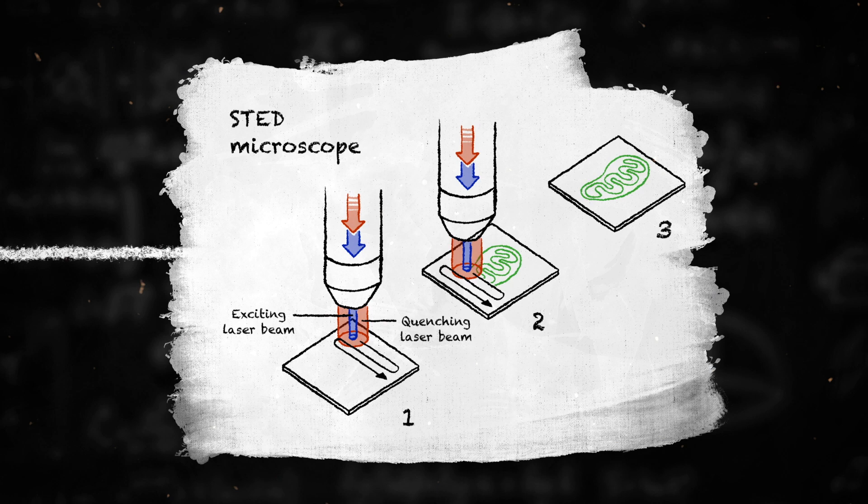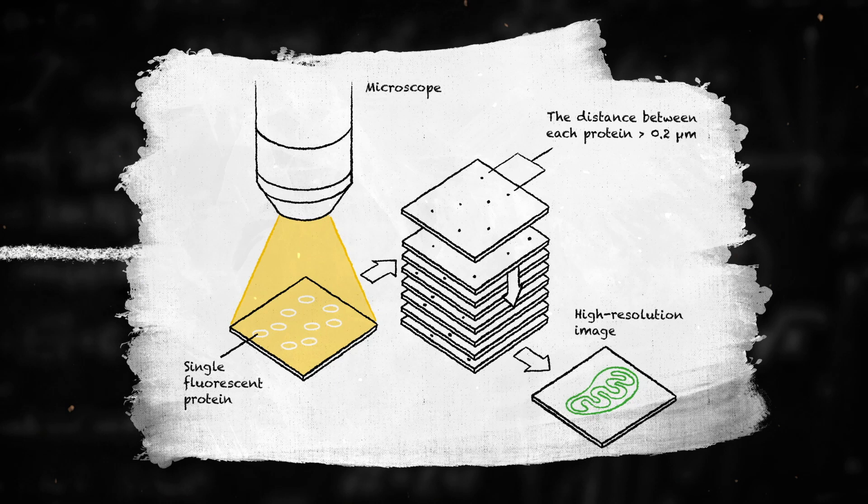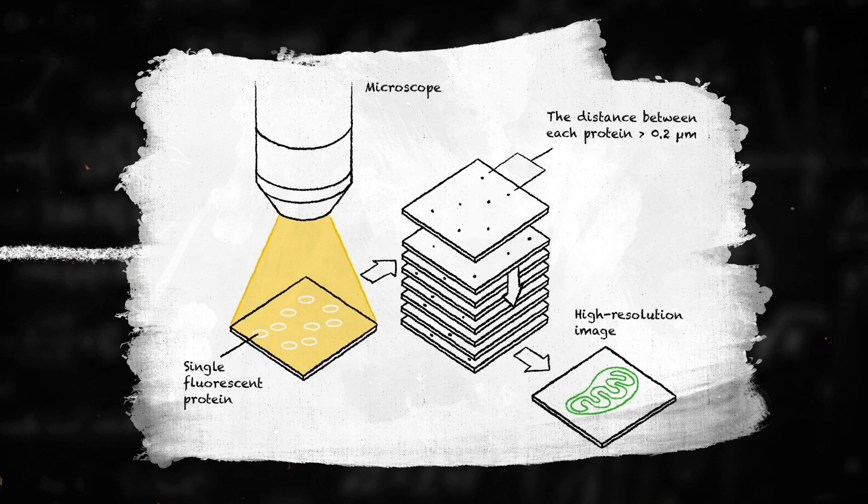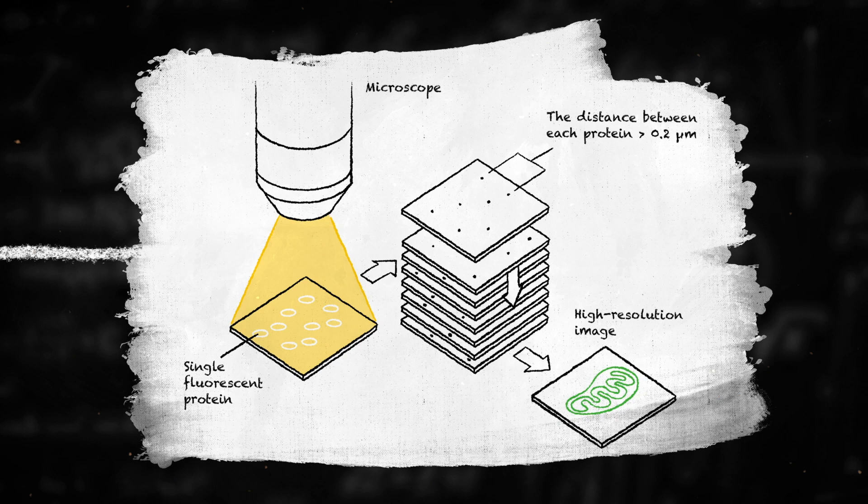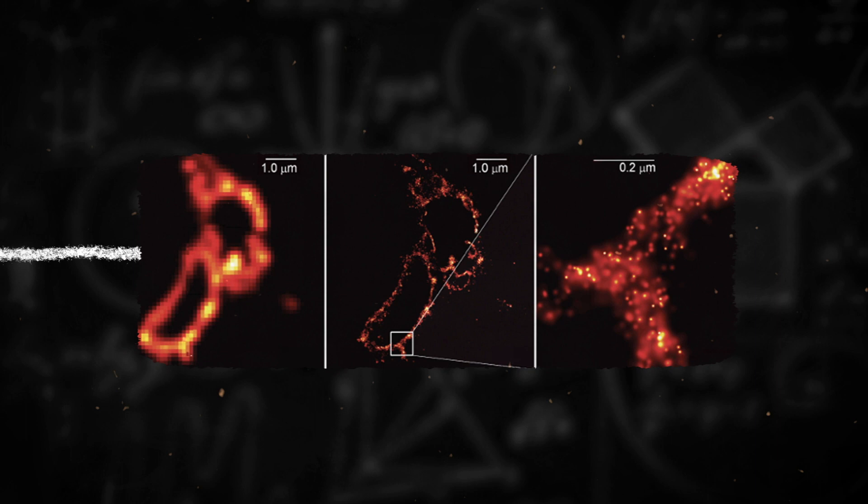In 1994 Stefan Hell developed a method in which one light pulse causes fluorescent molecules to glow while another causes all molecules except those in a very narrow area to become dark. As we can see here, an image is created by sweeping light along the sample.